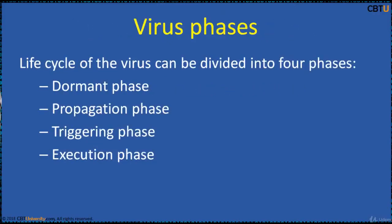The life cycle of a virus can be divided into four phases: Dormant phase, Propagation phase, Triggering phase, and Execution phase.